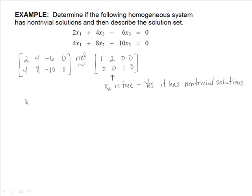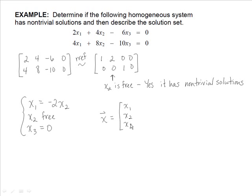We write the general solution: x1 equals negative 2x2, x2 is free, and x3 equals zero. Rewriting vector x — which contains variables x1, x2, x3 — and replacing with what they equal: x1 is negative 2x2, x2 is itself, and x3 is zero. Pulling out x2, we're left with the vector negative 2, 1, 0.